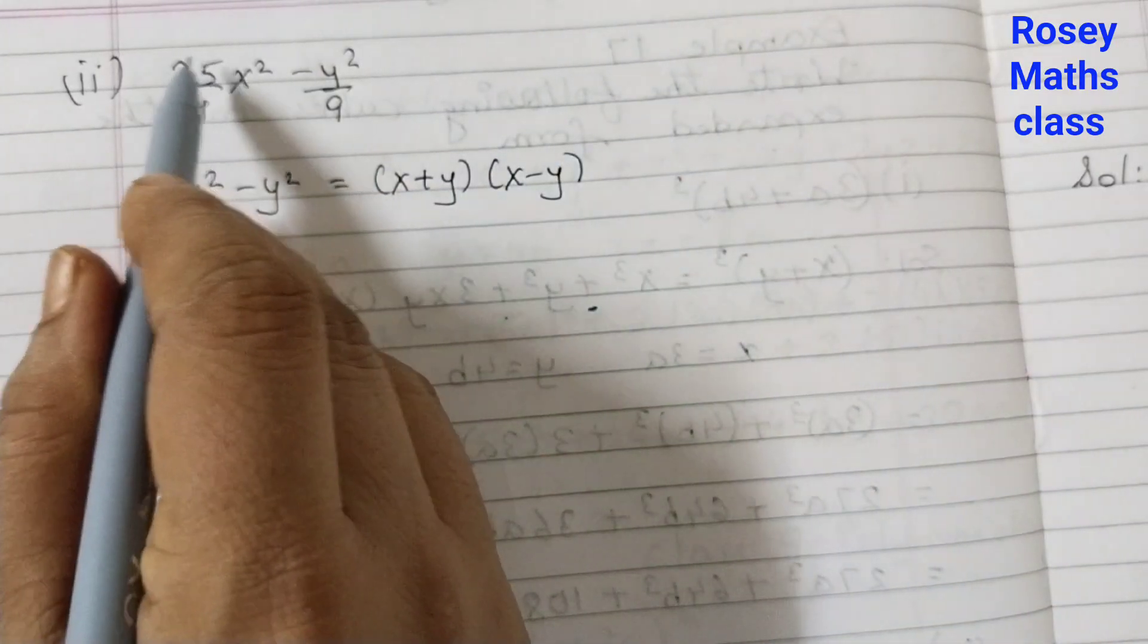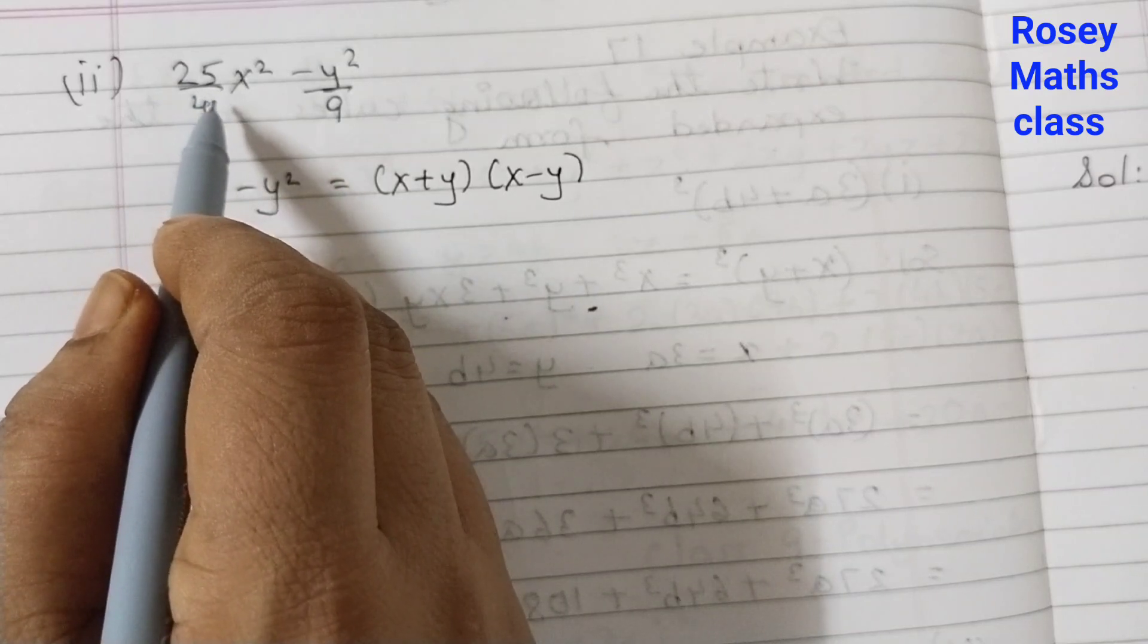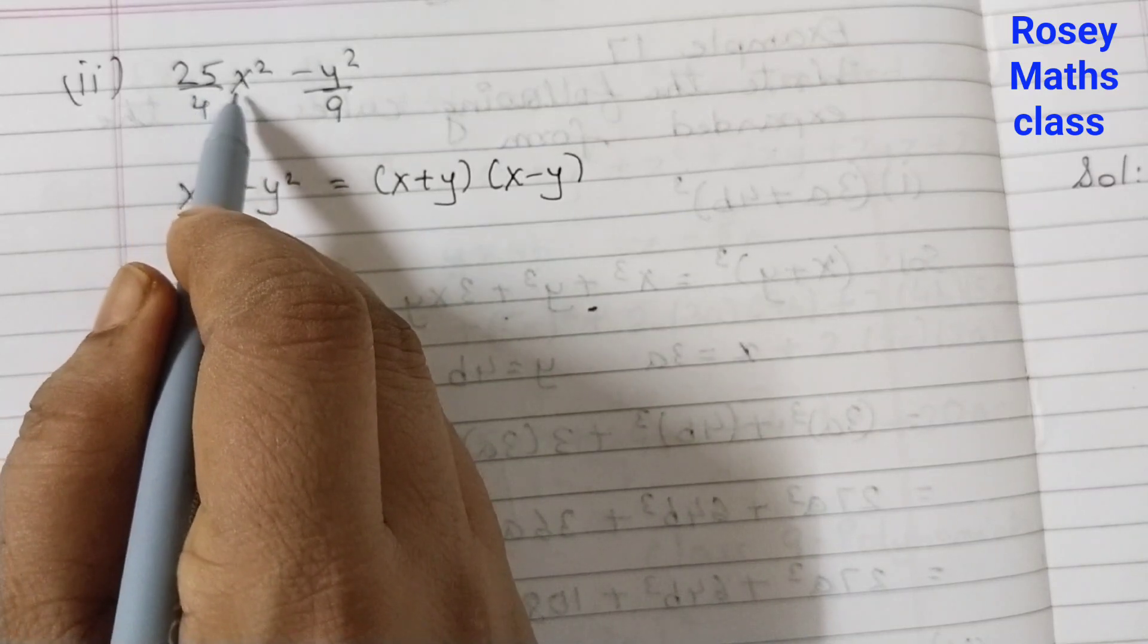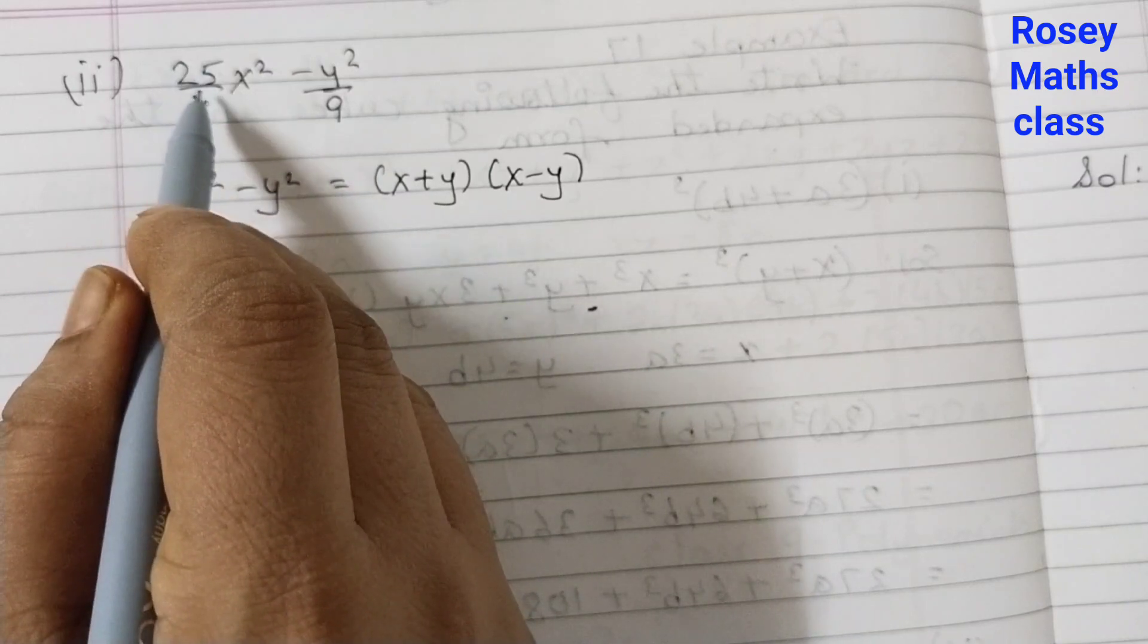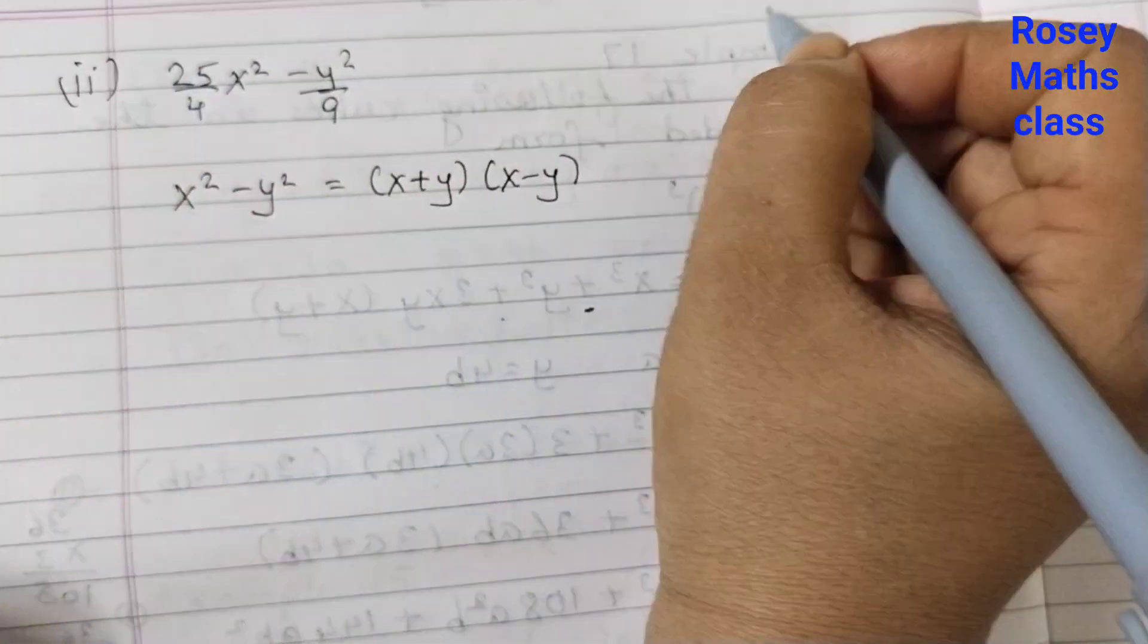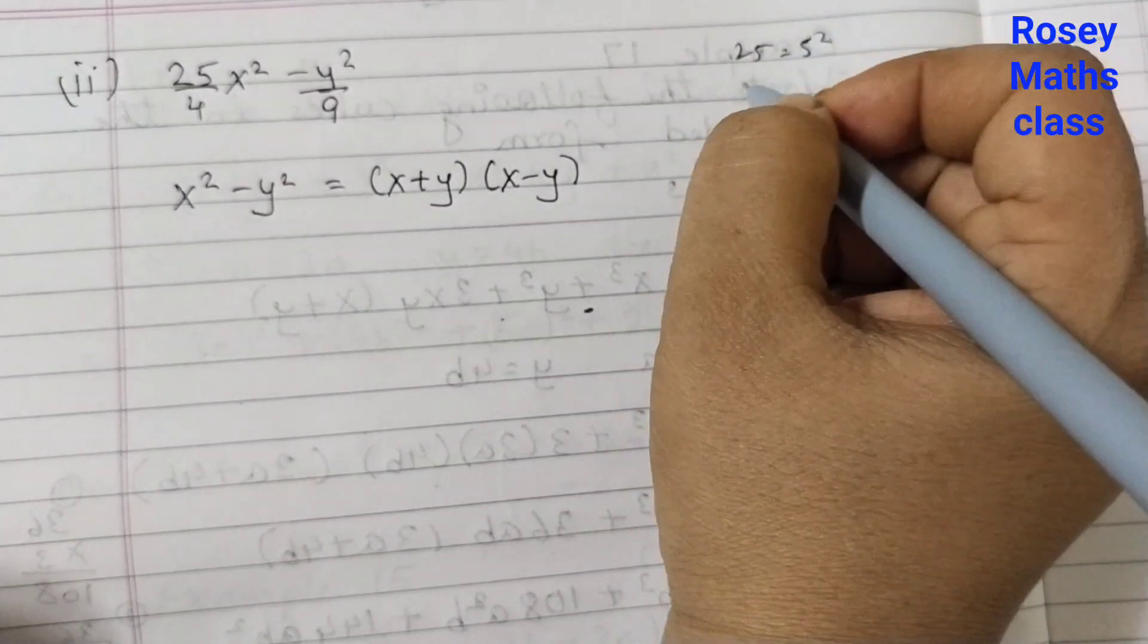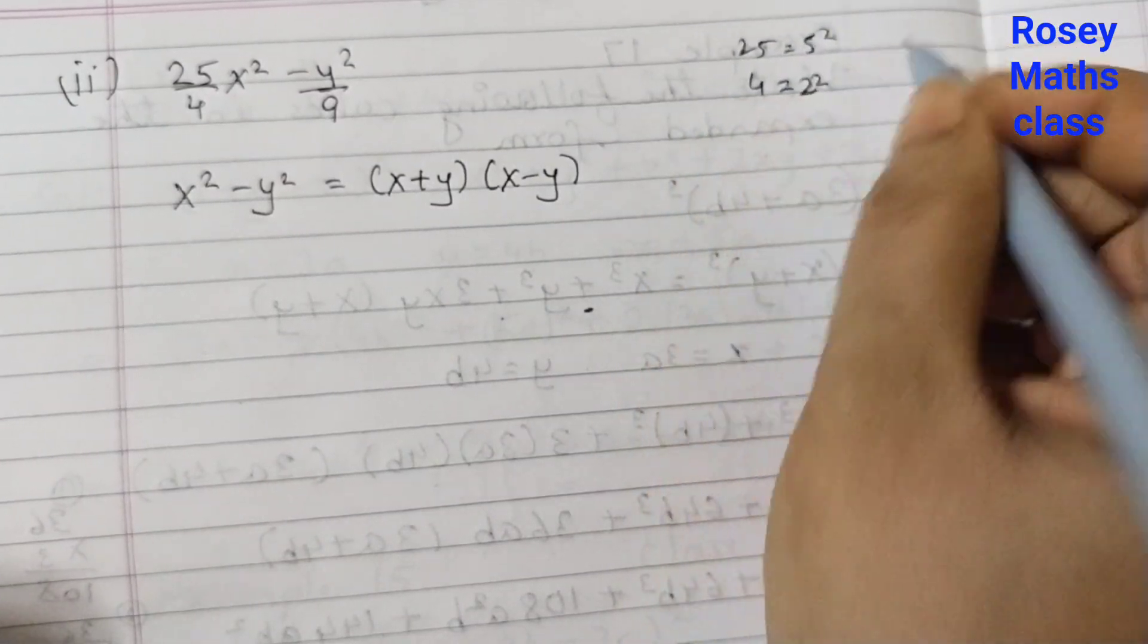So first we will rewrite this in such a way that we get a square of the whole thing because now this is just square of x. This number also we need to write in terms of square. So 25 is 5 squared and 4 is 2 squared.